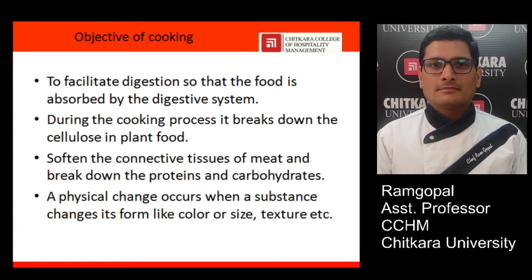Whenever you are giving heat to any food product, it softens the connective tissues of the meat and breaks down the protein and carbohydrates into a simple molecular structure so that our body can easily digest it. A physical change also occurs in food substances — it changes color, sometimes size, and sometimes the texture of the food product.